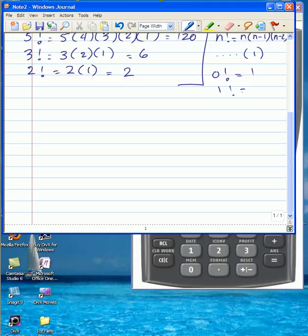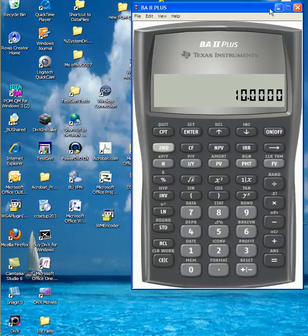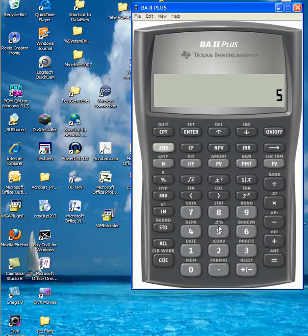So to do this computation with our calculator, we can do 5, second function key, and then push the plus key. And the reason why we do that is because n combination r, using this calculator, instead of x, they're using the symbol r. So n combination r is calculated using the plus key.